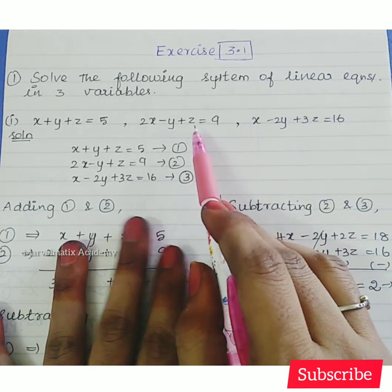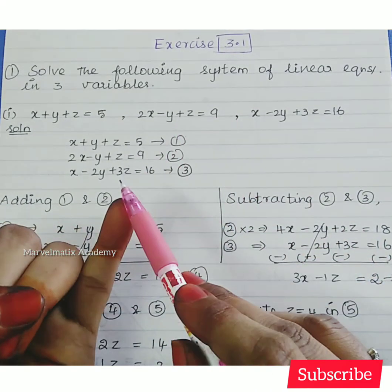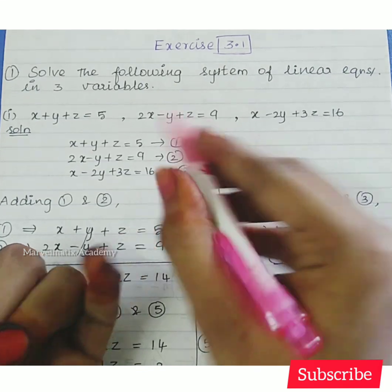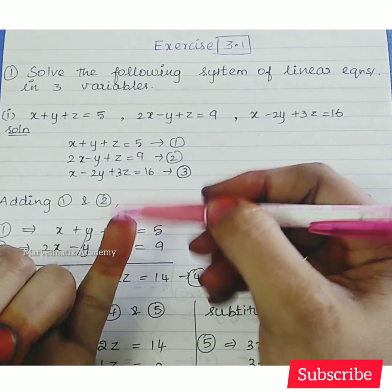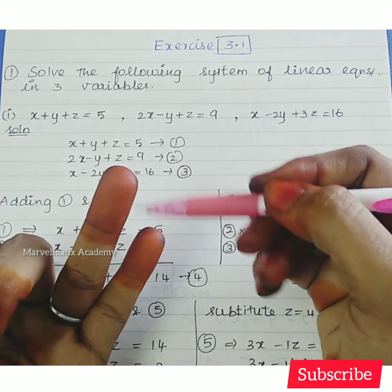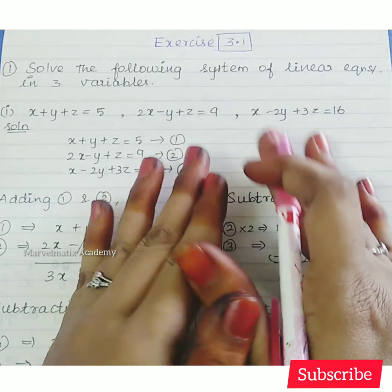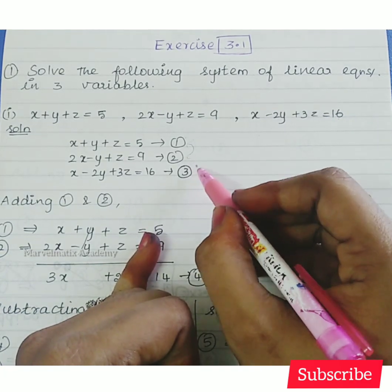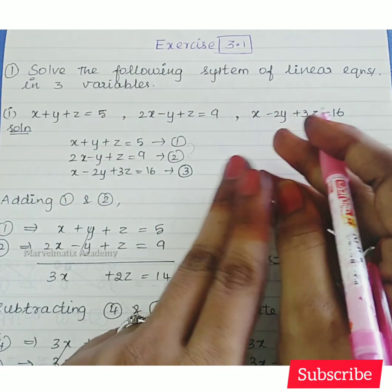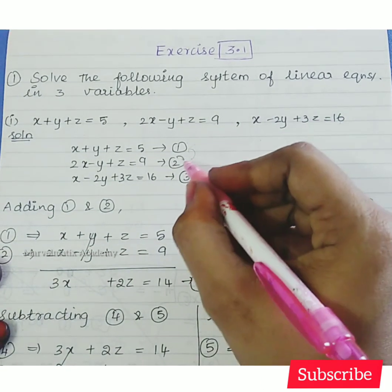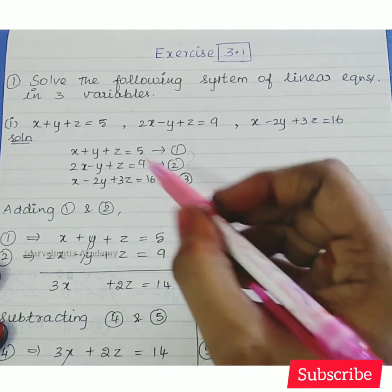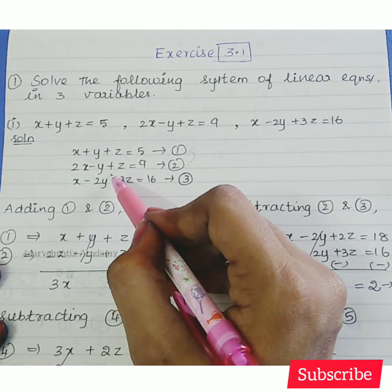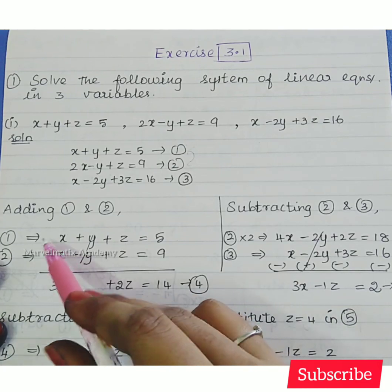Following the first step, we are going to eliminate variables. We take equations 1 and 2. For the second equation we have minus y; adding the equations, the y terms cancel out — add and strike out — so the remaining terms give us: 3x plus 2z equals 14. This is the fourth equation.